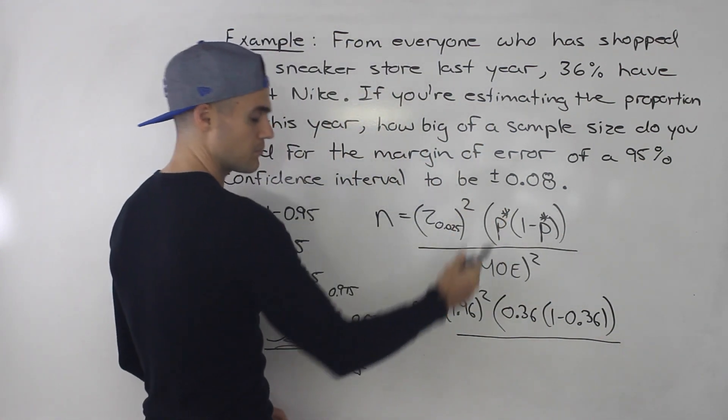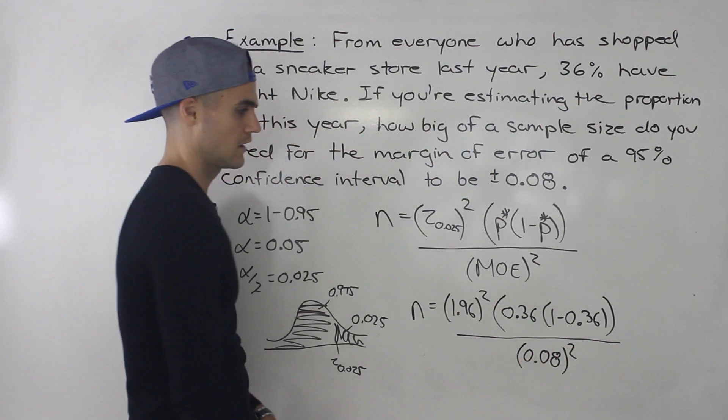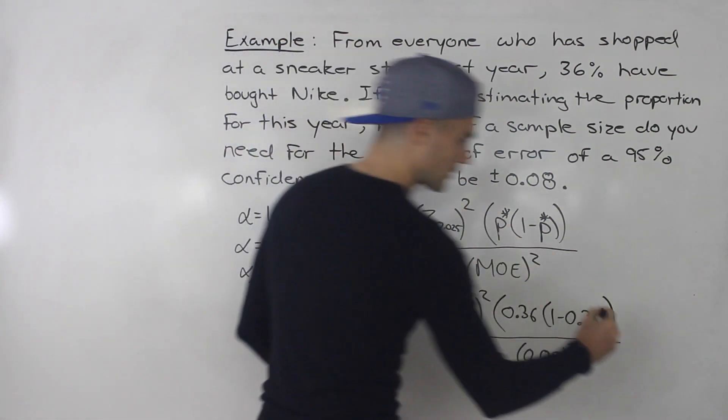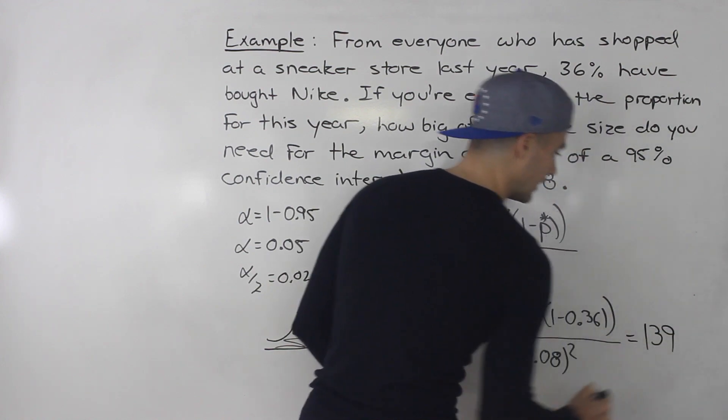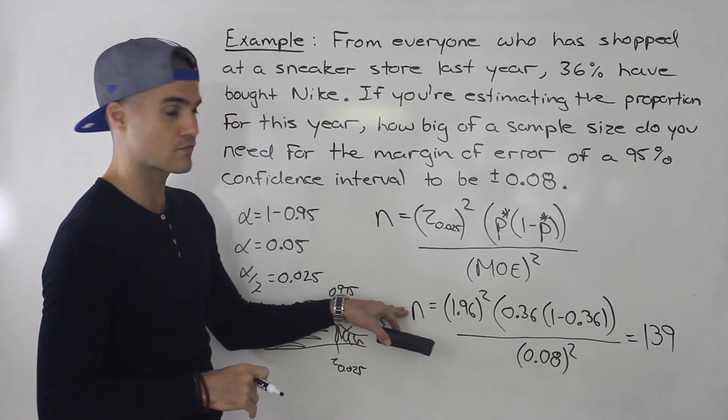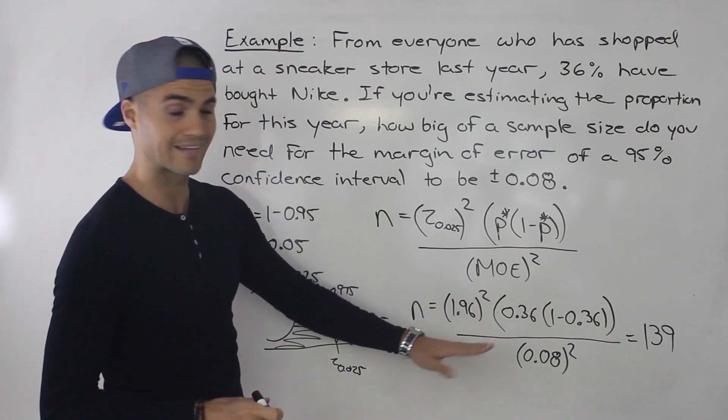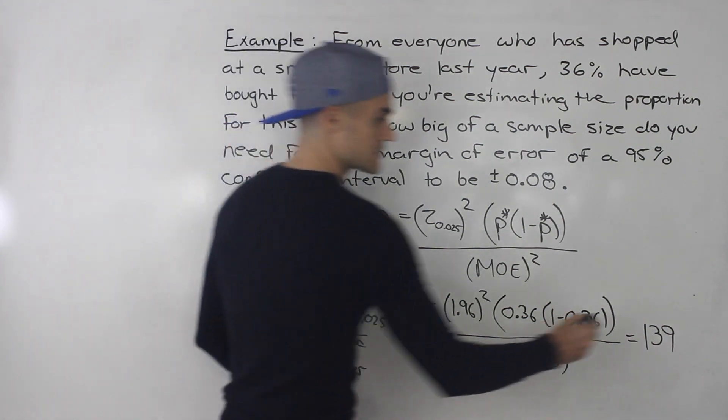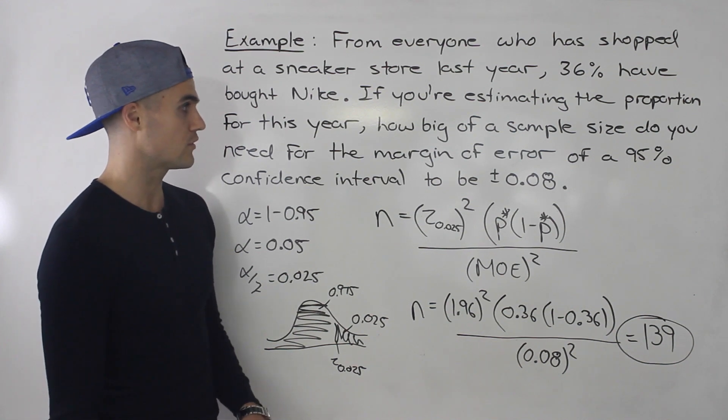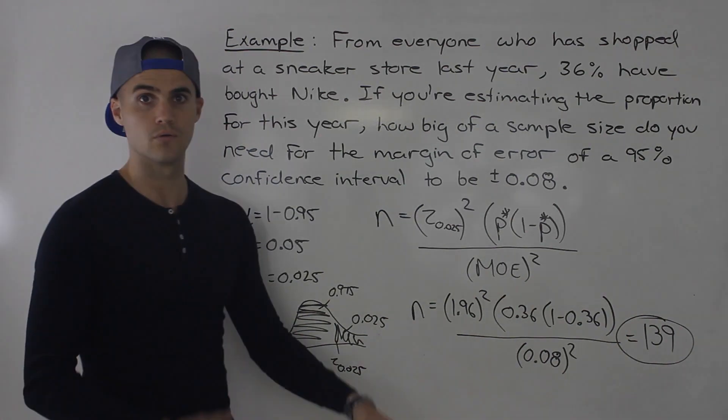And we want the margin of error to be 0.08. So this would be 0.08 squared. And when you do all of that in the calculator, you'd get 138 point something, and you always want to round up. I mentioned that in the previous video when we were dealing with population means, you always want to round up for this n value in order to get at least that margin of error. You always want it at least. So that's why you want to round up. So 139 is the answer. That's how big of a sample you need for the margin of error of a 95% confidence interval to be 0.08.